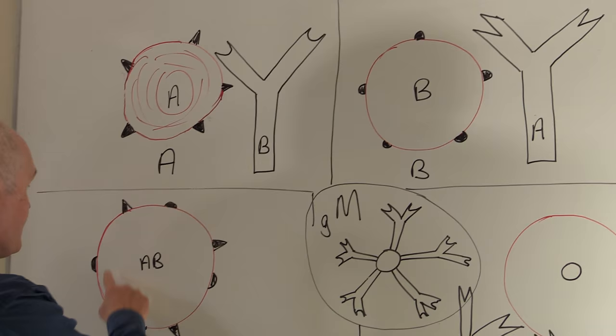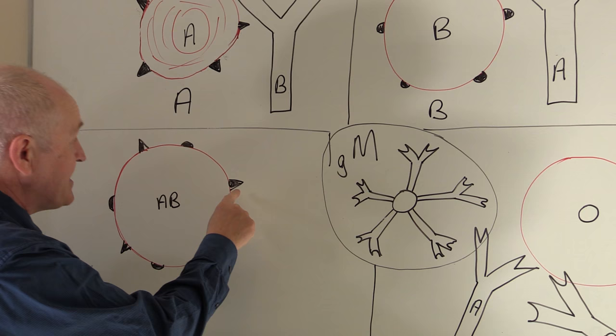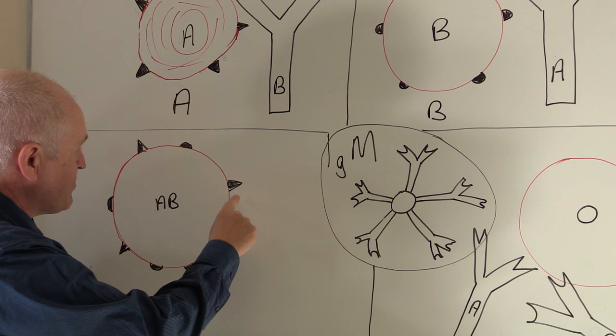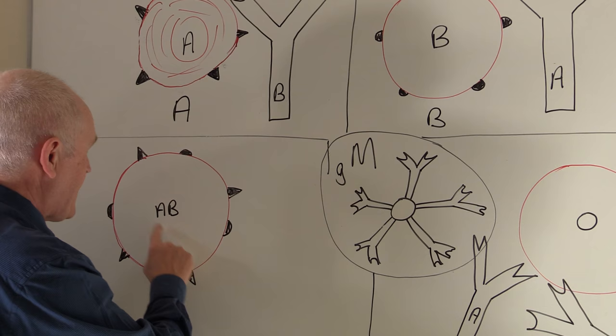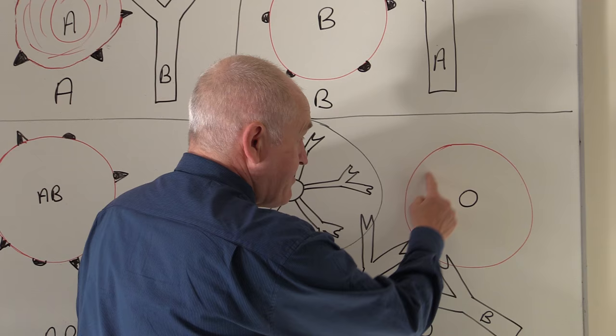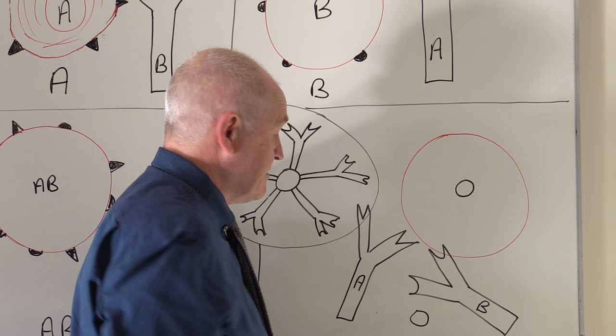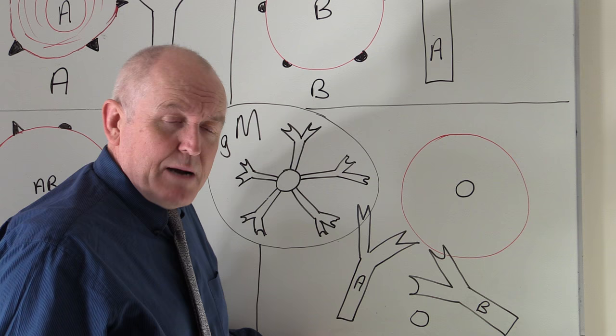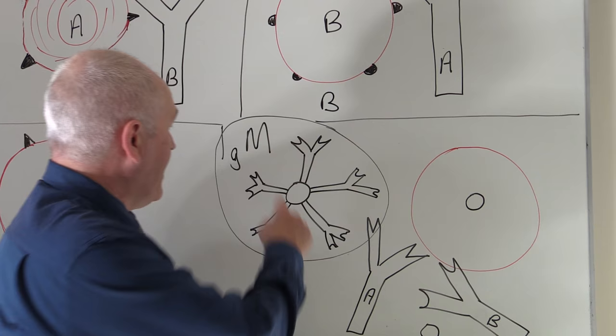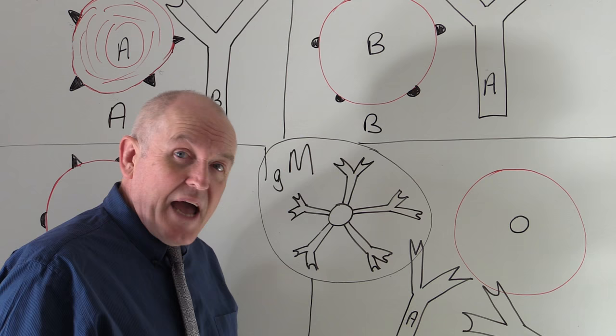If someone is blood group AB, it's because the red cells have both the A and B antigens. There are no antibodies in the blood if someone is AB. If someone is blood group O, there are no antigens on the red cells, but there will be anti-A and anti-B antibodies in the plasma. These antibodies are described as naturally occurring IgM antibodies in the plasma, present for any ABO groupings that you don't have.